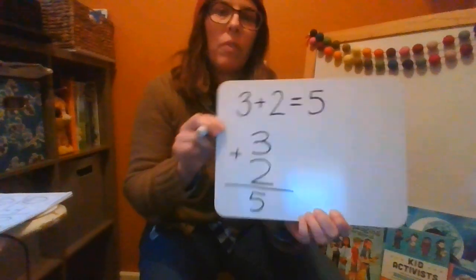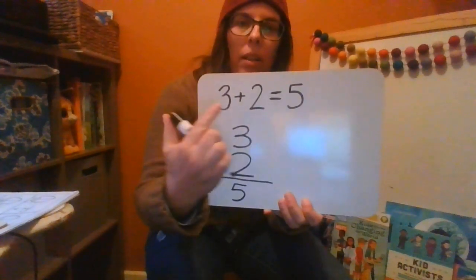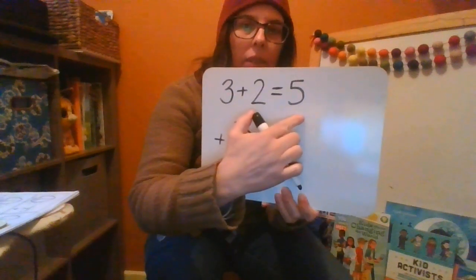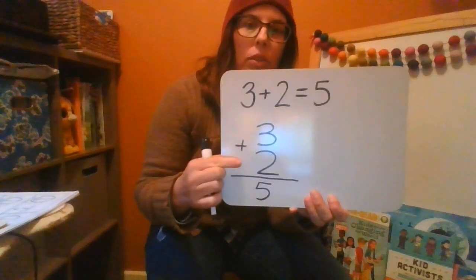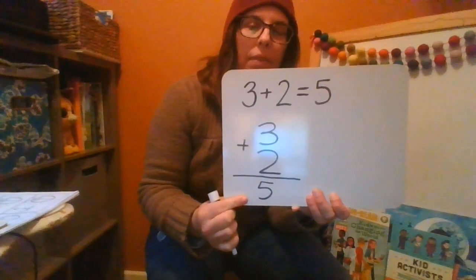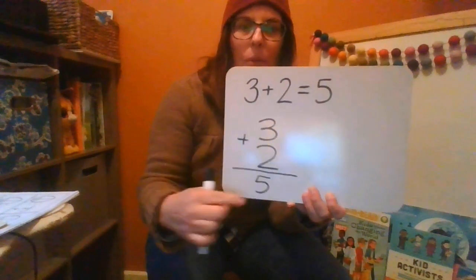So these are two different ways to write the same equation. 3 plus 2 equals 5. Looks like that. We could have it look like this. 3 plus 2 equals 5. So it could look both of those ways.